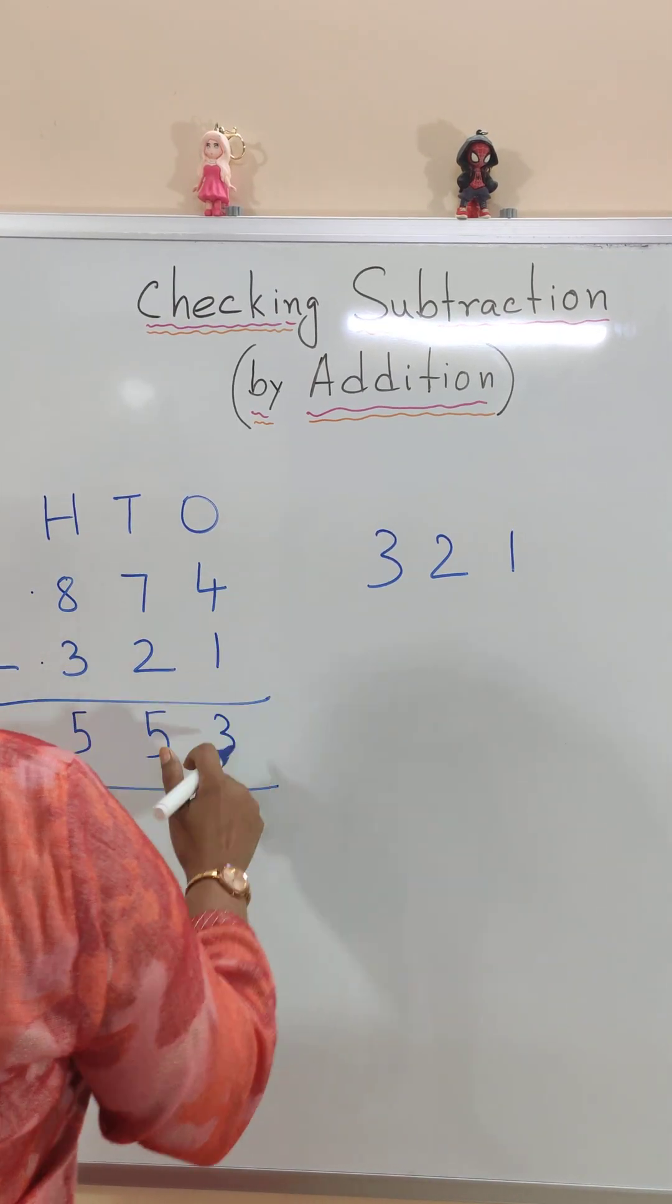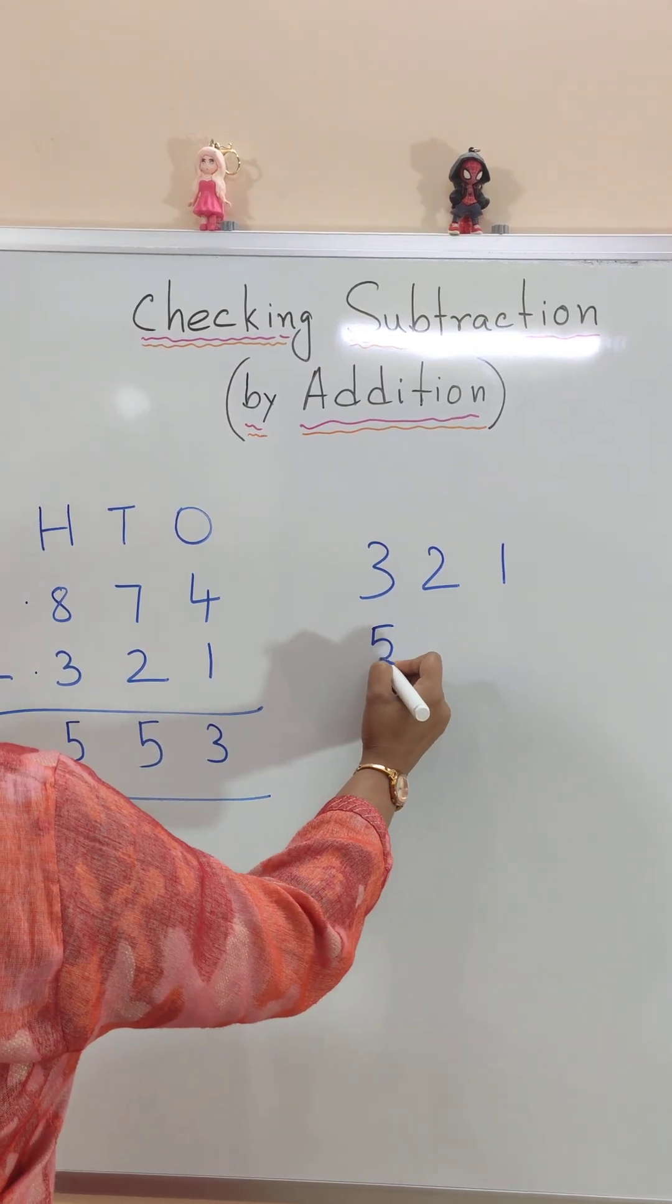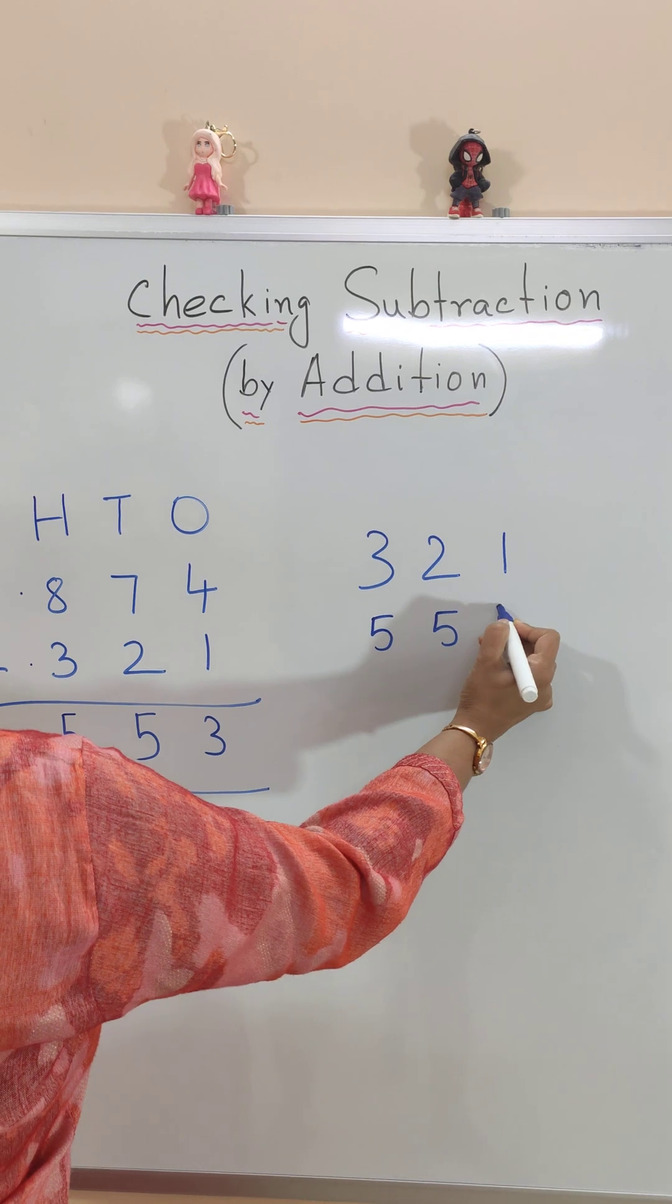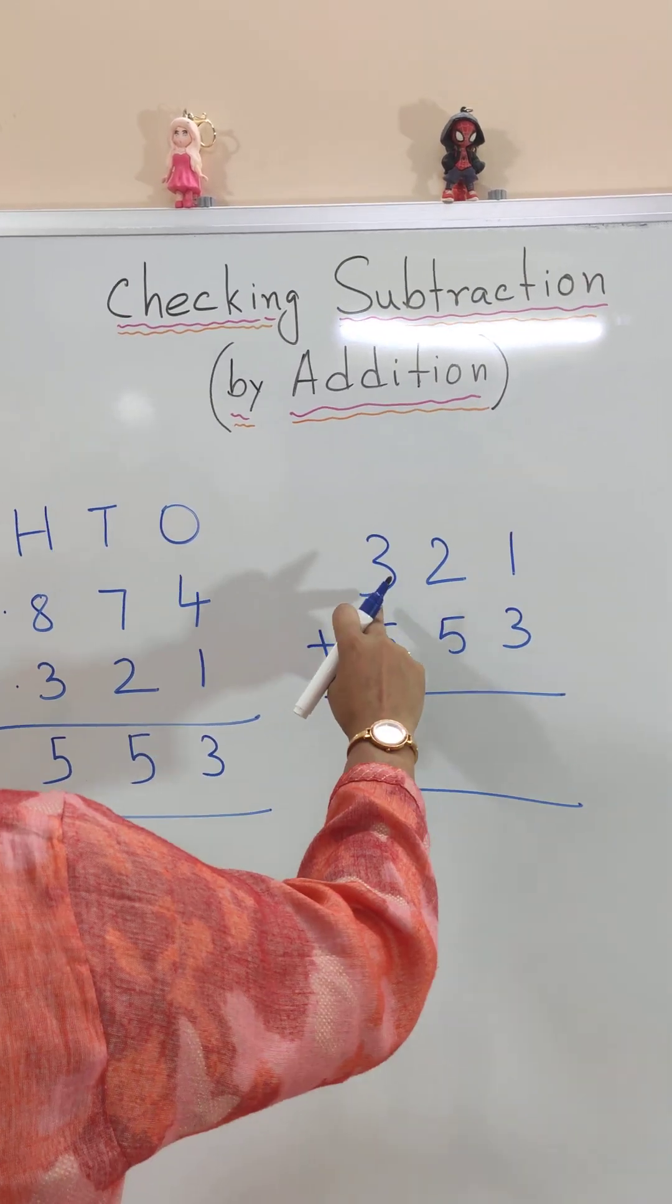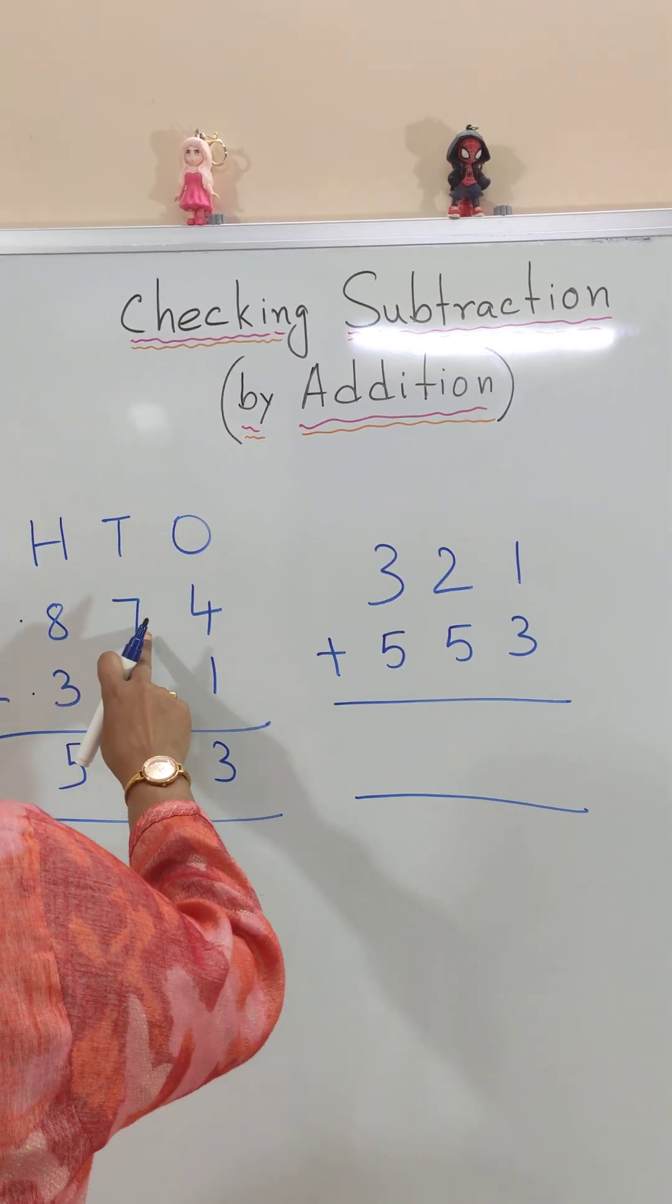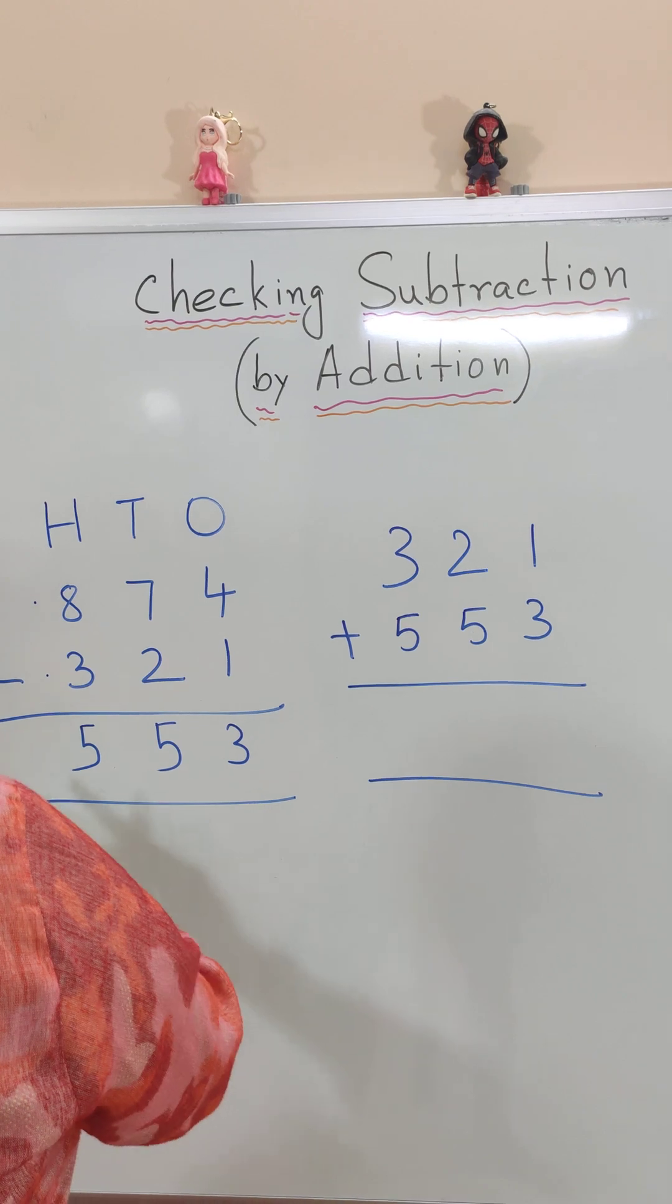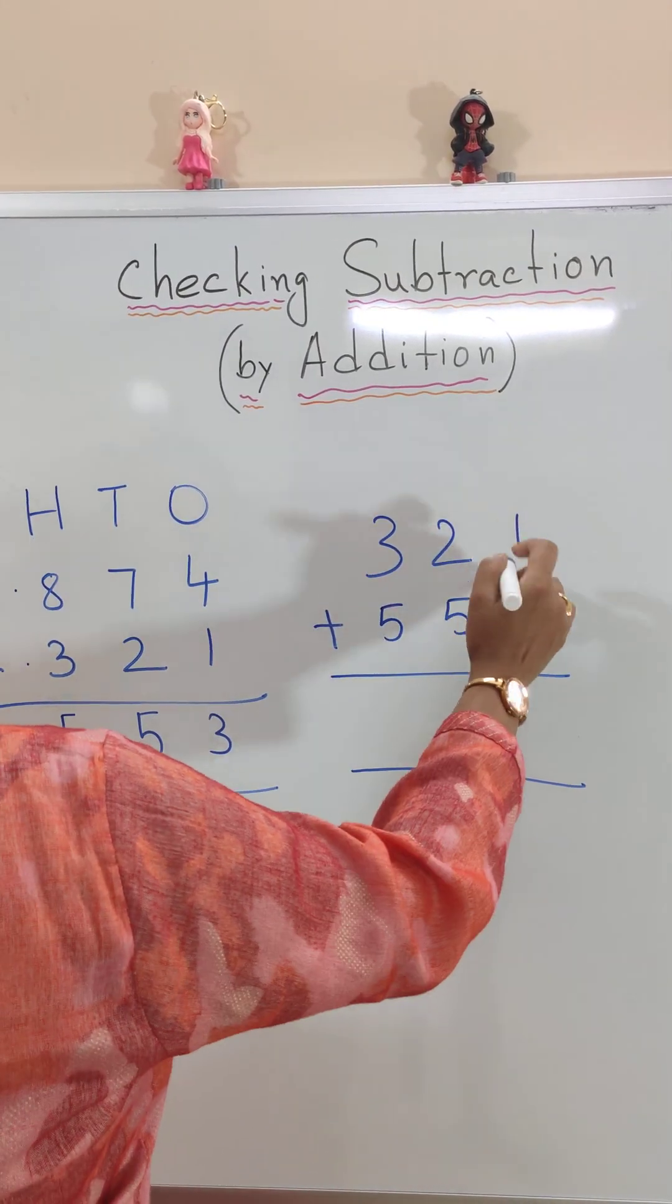Now we will write the difference, 553. Now we will add. After adding 321 and 553, if we get our answer 874, then we come to know that our subtraction is correct. So let's check the addition.